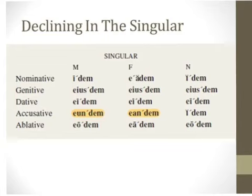The way both the pronoun and the adjective decline is like is, ea, id, except you add '-dem' at the end. Notice your case inflection will be in the middle of the word, because all of the forms of idem will end in '-dem.' When you're trying to identify the case of a form of idem, look in the middle — you're basically declining is, ea, id, and adding '-dem.'